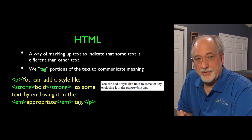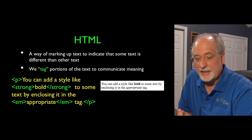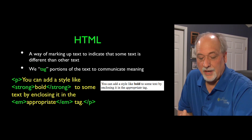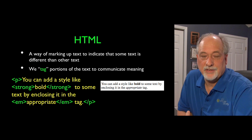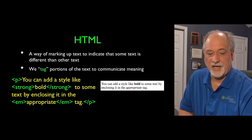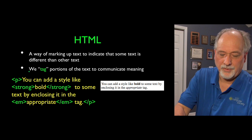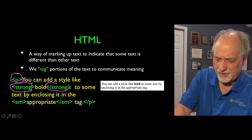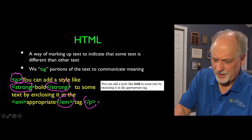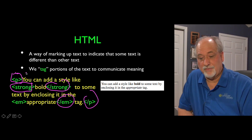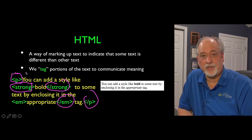HTML is just a technique of using some special characters — less than and greater than — to add tags to indicate what we want to see. Like the paragraph tag, the strong tag which makes things bold, the emphasize tag. We have these tags and we just mark up content, communicating meaning.